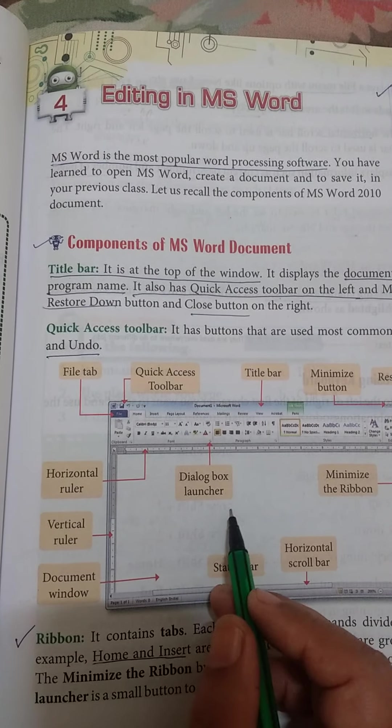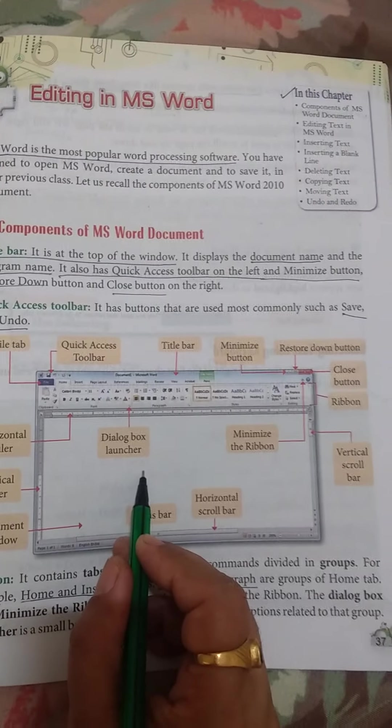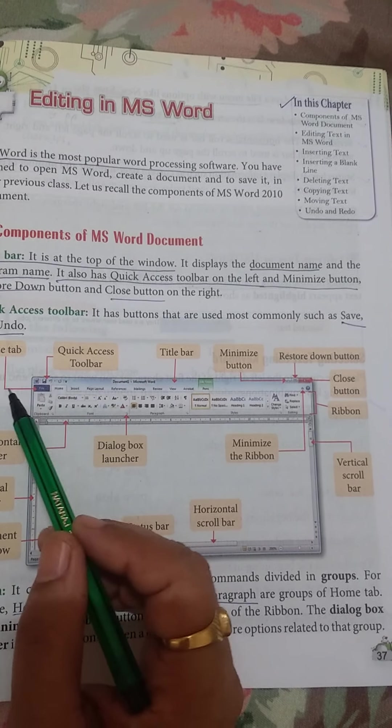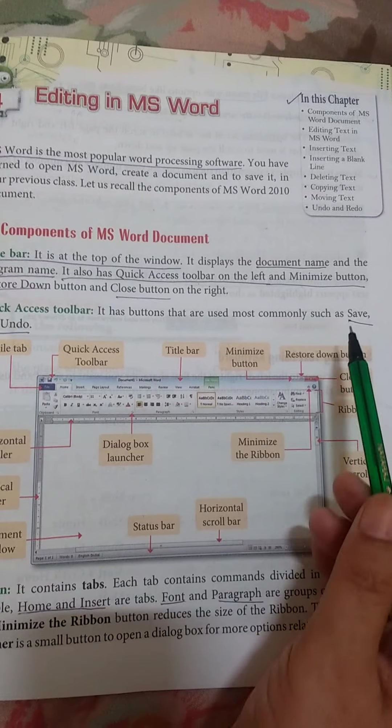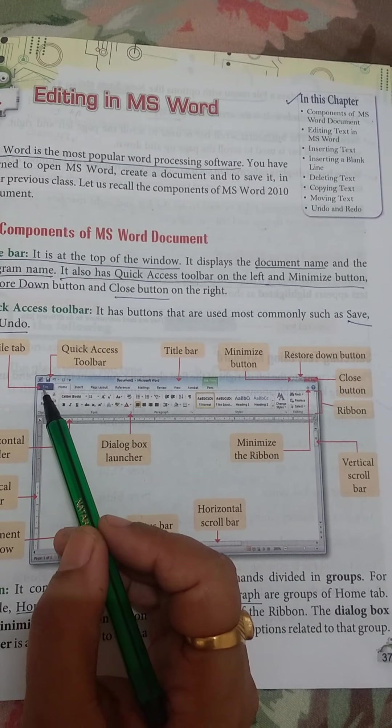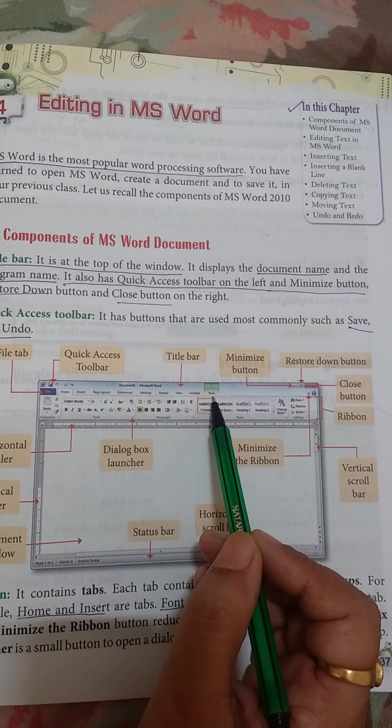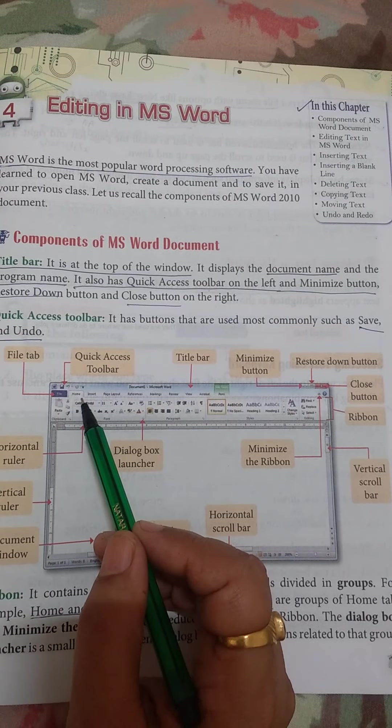Here a picture is given of MS Word and components are shown. Quick access toolbar has save and undo commands. This is file tab. All these tabs have commands inside. When we click on it, we get commands.